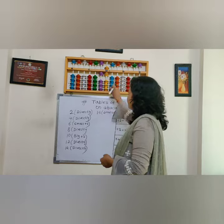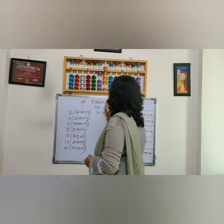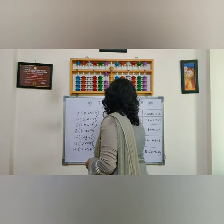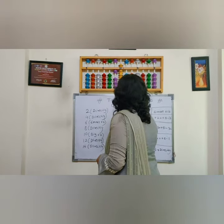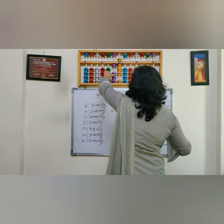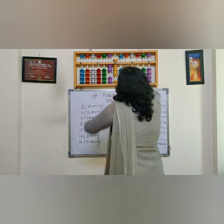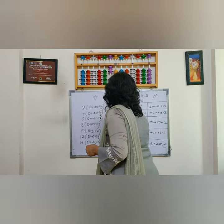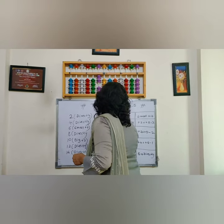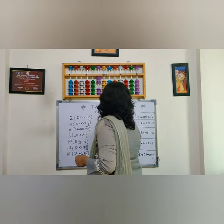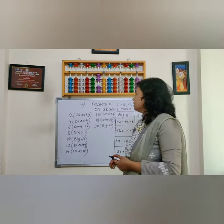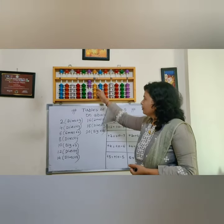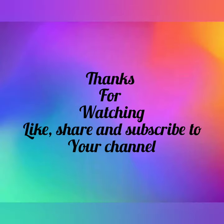Again take a 2 directly. 2 times 9 is 18. And last, take a 10, cut 8. 2 times 10 is 20. Here use the big B plus 2 formula. See here, our table is completed up to 10 times.